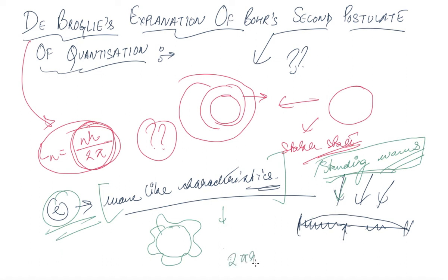2πrn, where rn is the radius of the orbit, which equals nλ. Only then will it have its own specific orbit—that is, an integral multiple of the wavelength. If it's an integral multiple of the wavelength, like we discussed,